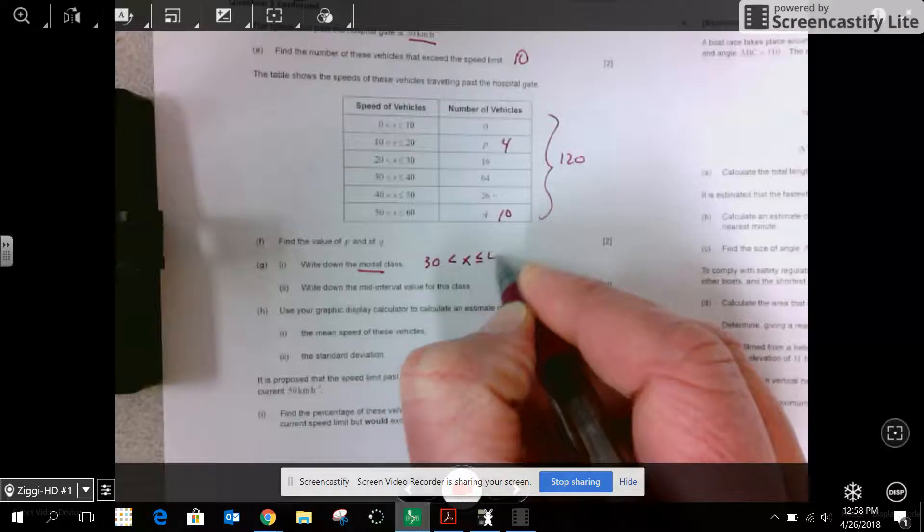Write down the modal class. Modal means I'm finding the mode. That would be 30 to 40. Write down the mid interval value. What's the midpoint? 35.